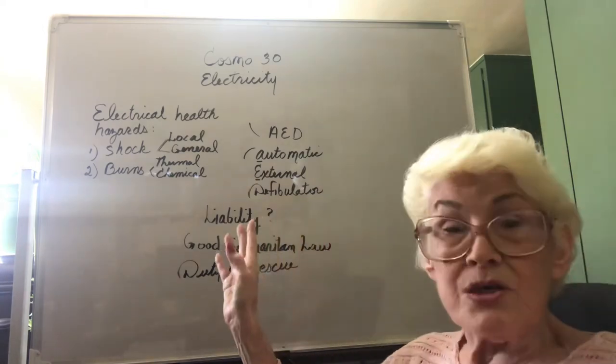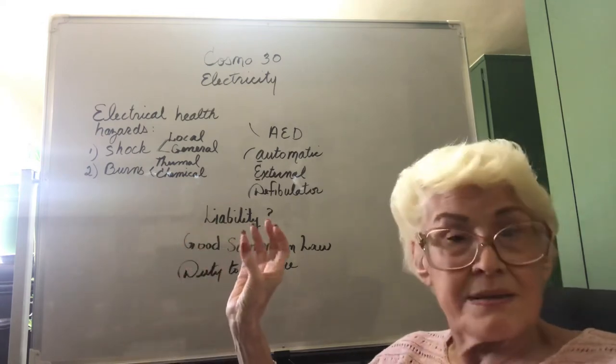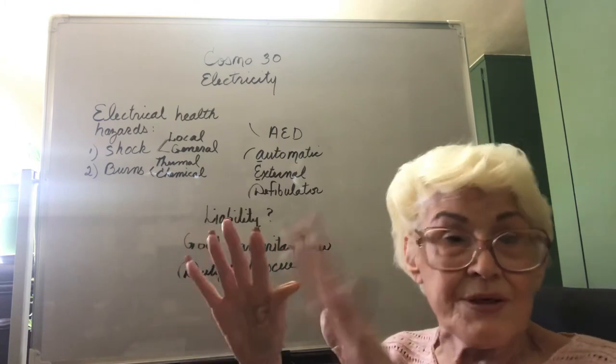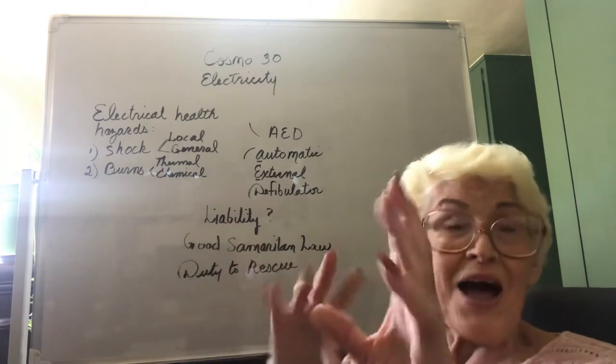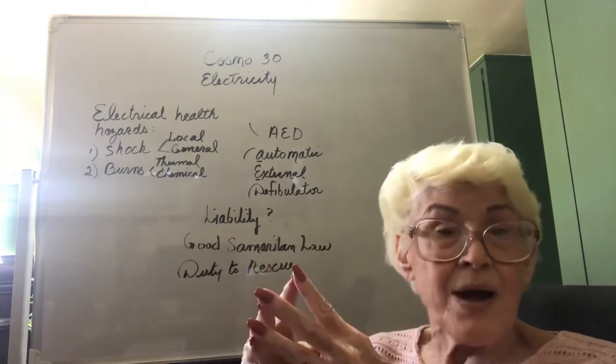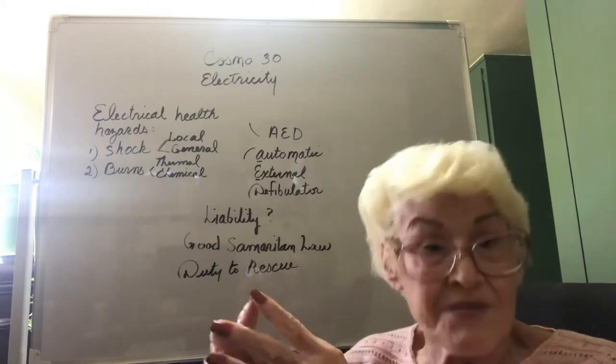When you are around someone who has a heart issue, that's electrical, because your body runs. I'm going to explain to you how the heart and the central nervous system use electricity and why electricity can harm you, but also how electricity can save your life.